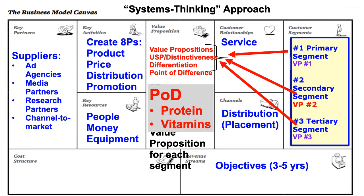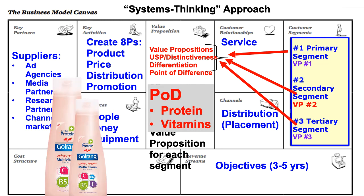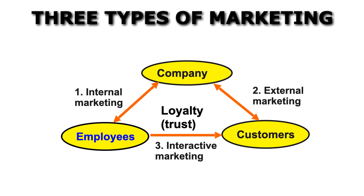Let's look at a case study. Say we had a shampoo with two PODs — protein and vitamins in the ingredients. This is a product I used in Iran that claimed to have multivitamins and protein. Interestingly, your hair is 100% dead and does not need protein or vitamins. This is unfortunately an example of marketing being sometimes unethical — giving people things that don't really work.